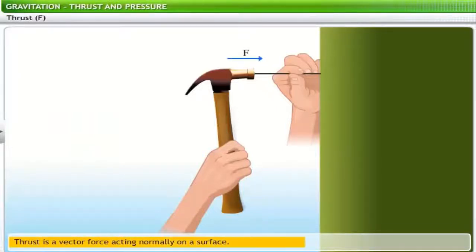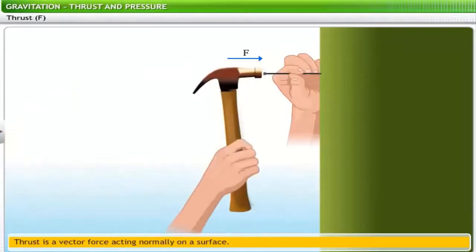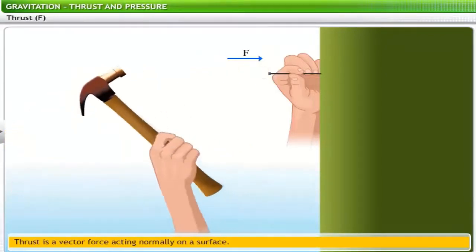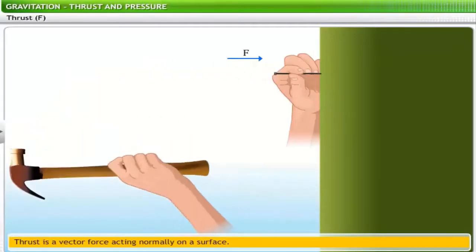Thrust is a vector force acting normally on a surface and is denoted by F. For example, consider the simple act of driving a nail into a wall with a hammer. The force that you exert on the hammer during this activity is thrust.